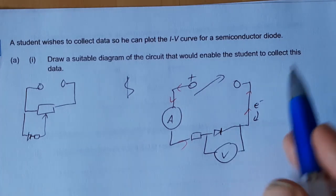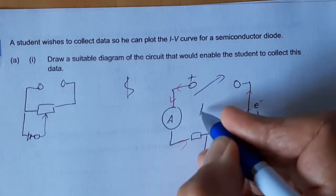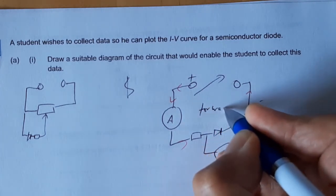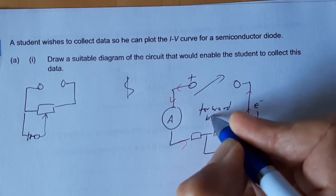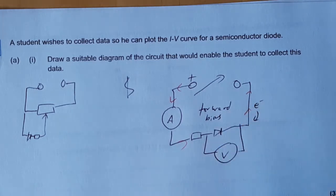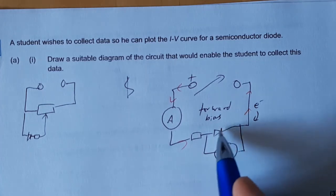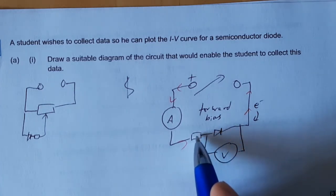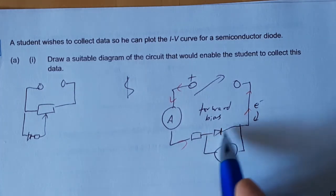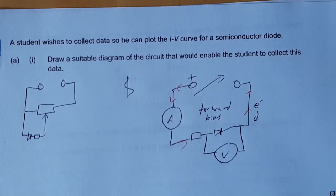But that leads to this term forward bias. The bias is the way around the diode is, and if it's in the forward bias, that means the electricity goes through that way. It's easy for the electricity to pass through.